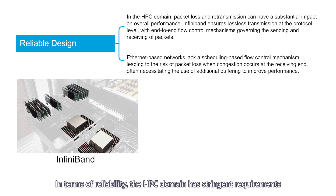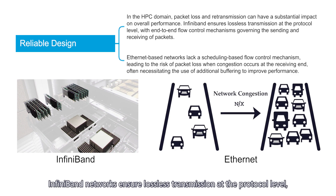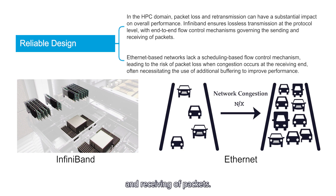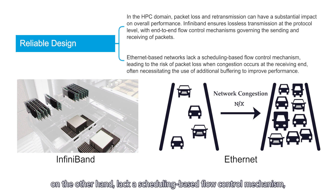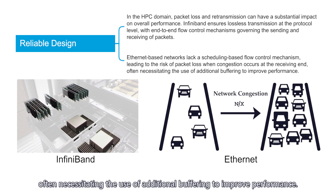In terms of reliability, the HPC domain has stringent requirements for overall system performance and reliability. InfiniBand networks ensure lossless transmission at the protocol level, with end-to-end flow control mechanisms governing the sending and receiving of packets. Ethernet-based networks, on the other hand, lack a scheduling-based flow control mechanism, leading to the risk of packet loss when congestion occurs at the receiving end, often necessitating the use of additional buffering to improve performance.